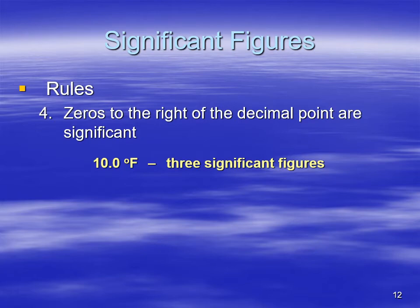Rule number four: zeros to the right of the decimal point are significant — they tell you the place of uncertainty. In this case, you've got 10.0 degrees Fahrenheit and you're uncertain in that last 0. It could be 0.1 or 0.2 — we didn't state the uncertainty, but you're uncertain in that last value. So we have three significant figures.